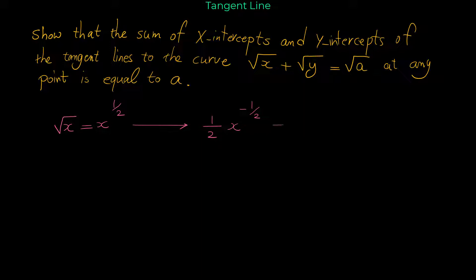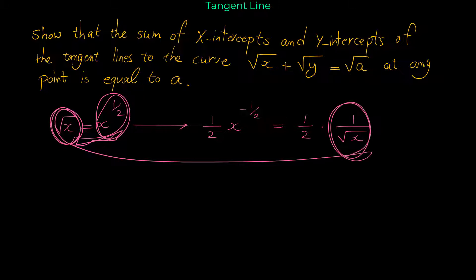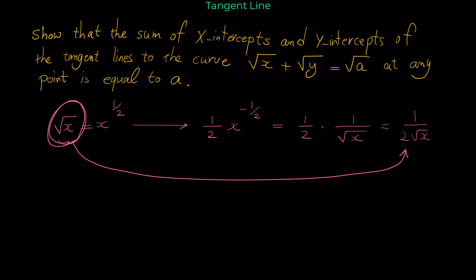You can write this as one half times one over the square root of x, because x to the negative one half is one over the square root of x. So you can write this simply as one over two square root of x. I highly recommend you memorize that the derivative of square root of x is one over two square root of x.